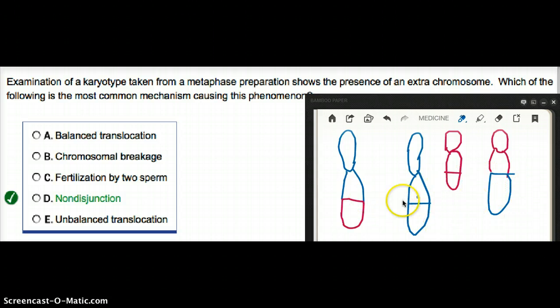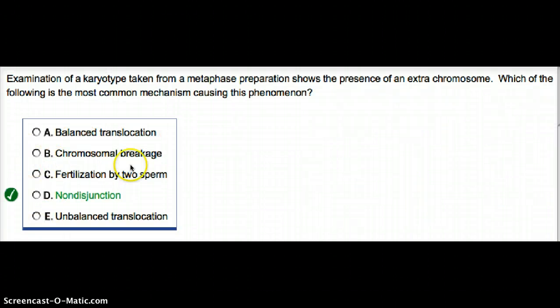This kind of non-homologous exchange of genetic material is called balanced translocation.